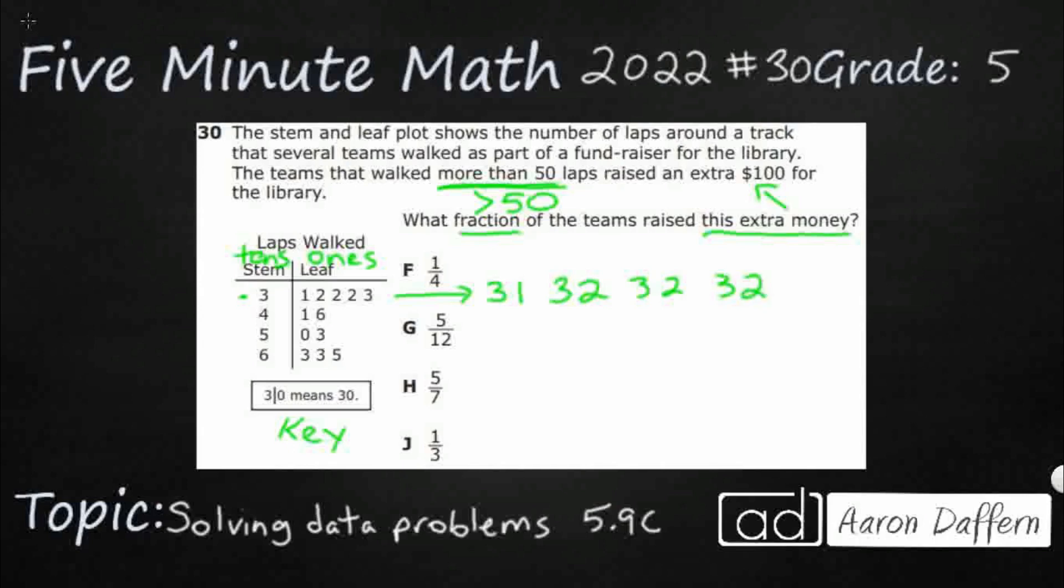So the stem and leaf plot becomes important when you've got a whole bunch of numbers within a very tight range. So all of these 30s just became a lot easier because I just took that initial 3 off, put it over there in the stem.